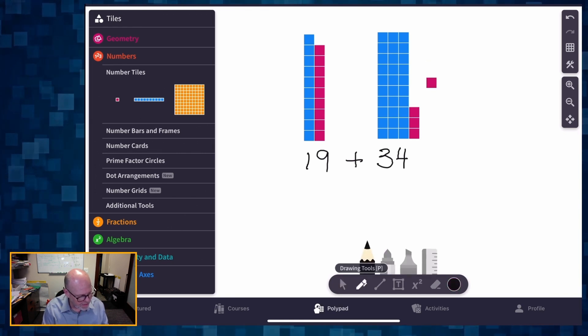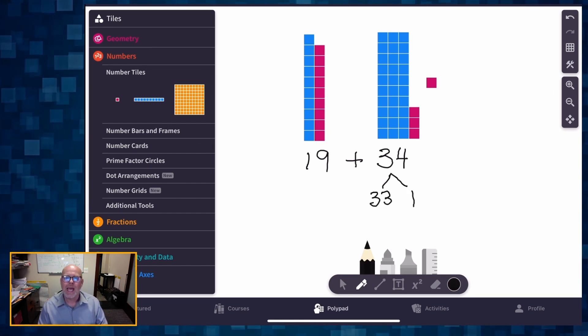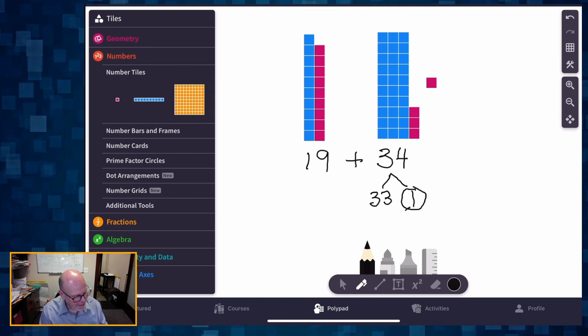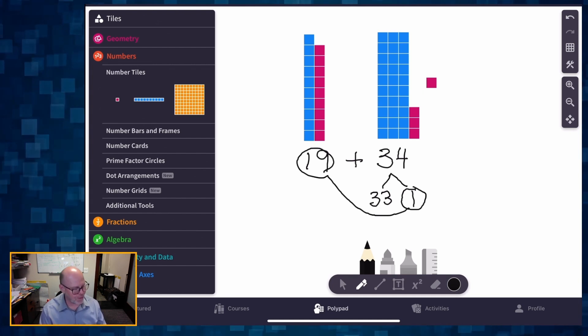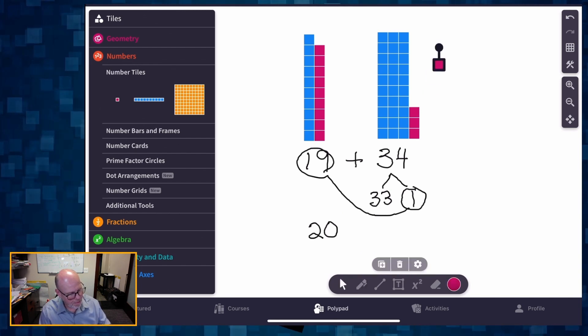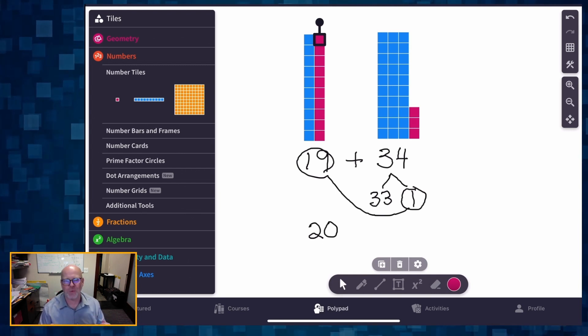So what is that going to do? That's going to give me 33 plus one. And I'm going to take that one and I'm going to give him to the 19. And what is that going to do? That's going to give me 20. Well, let's see if that really is going to give me 20. So I'm going to bring him over. Bam, I've got 20.